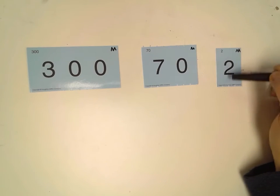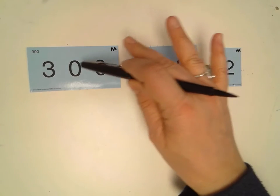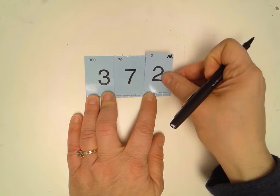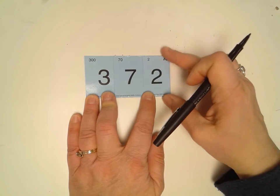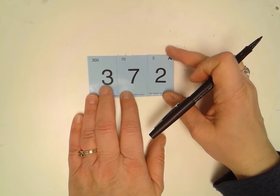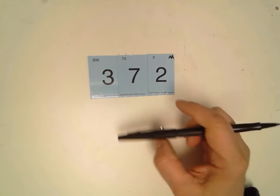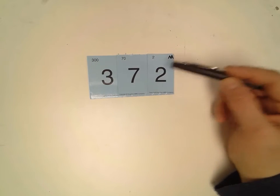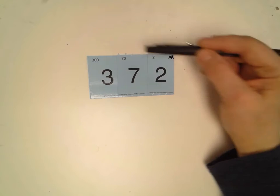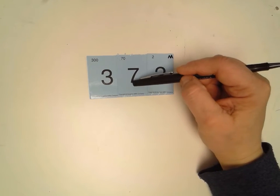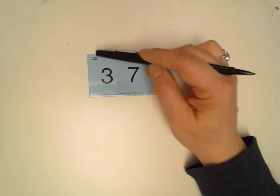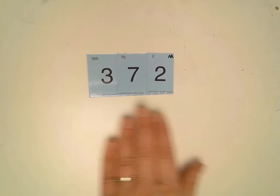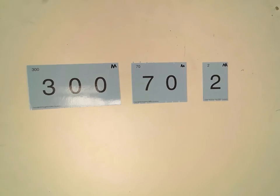You're also going to notice that when we have it this way we can see all of the place values there. So that's expanded. But when we go to a standard number we're going to put them on top of each other and they're all going to line up on the right hand side here. And you're going to have 372. Now this is what we call the standard number because this is how we most often see numbers. And each of these digits has a value. And up in the left hand corner you're going to see that value. This two is a value of two. This seven has a value of 70. And this three has a value of 300. So when we look at them that way that's our standard number and then we look at it this way it's our expanded number.